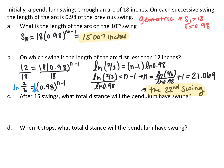For the second part, we want to find which swing the arc length will first be less than 12 inches. Setting the explicit formula equal to 12: 18 × 0.98^(n−1) = 12, divide both sides by 18, then use logarithms. Taking the natural log of both sides: ln(2/3) = (n−1) · ln(0.98). Dividing by ln(0.98) and adding 1 gives approximately 21.069, so it would have to be the 22nd swing.